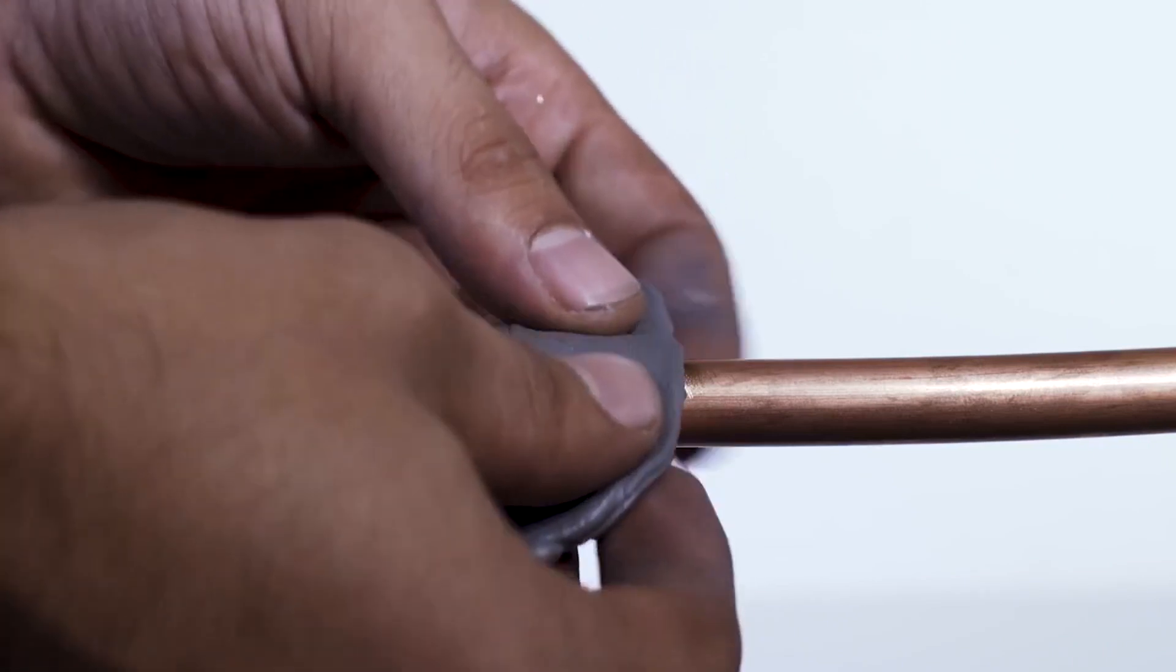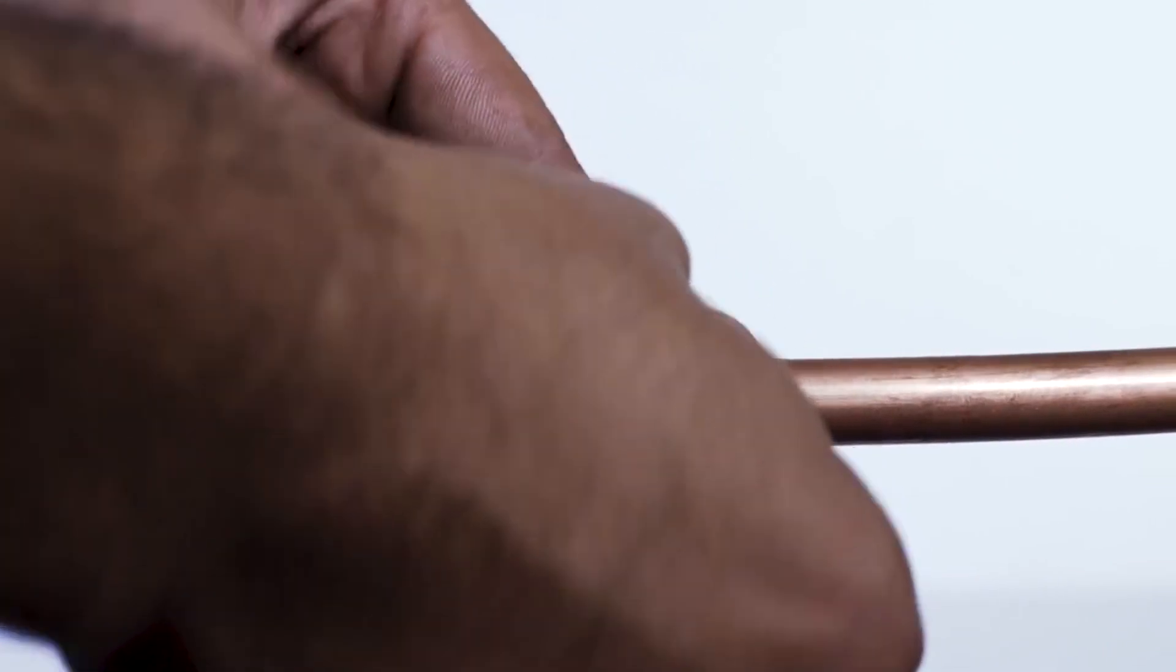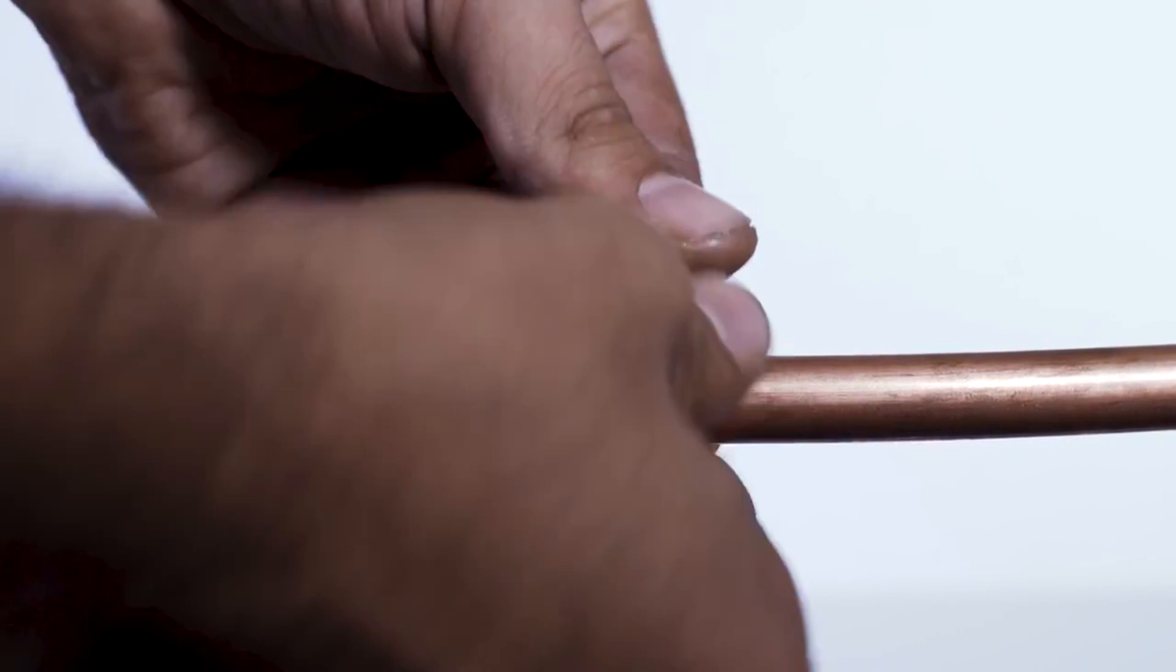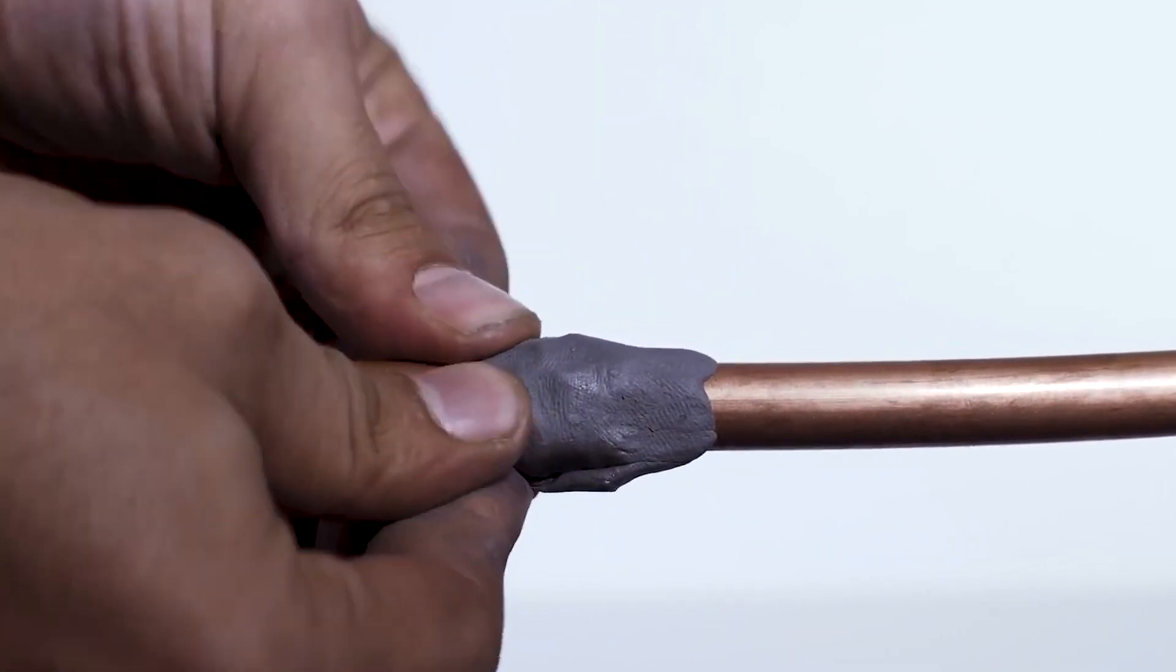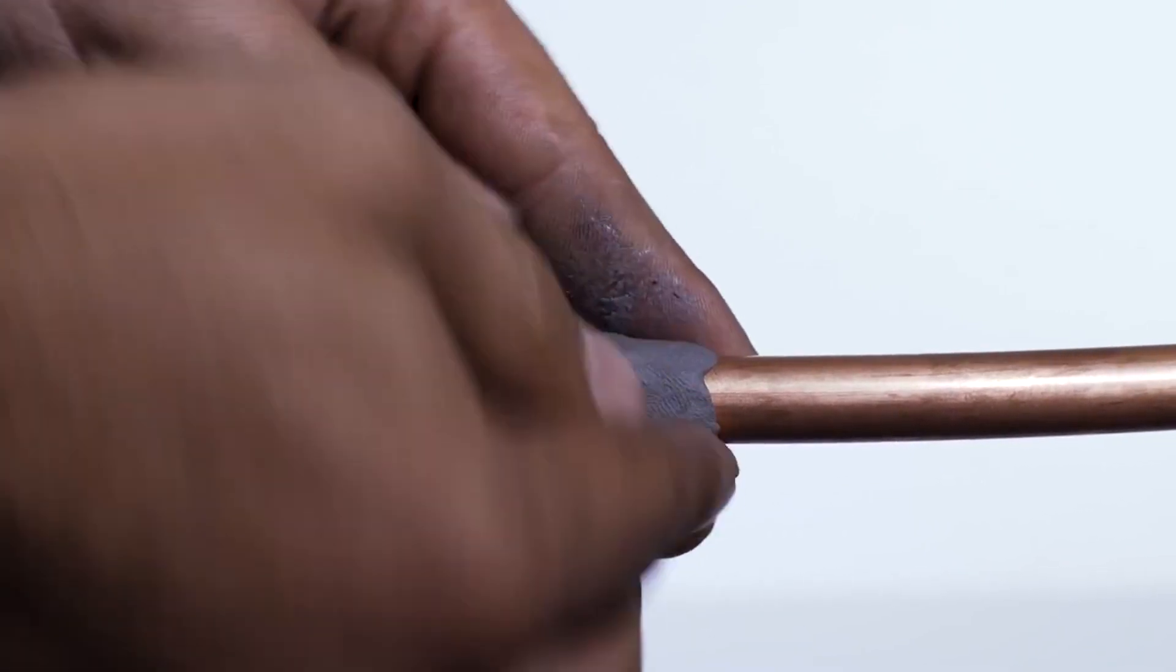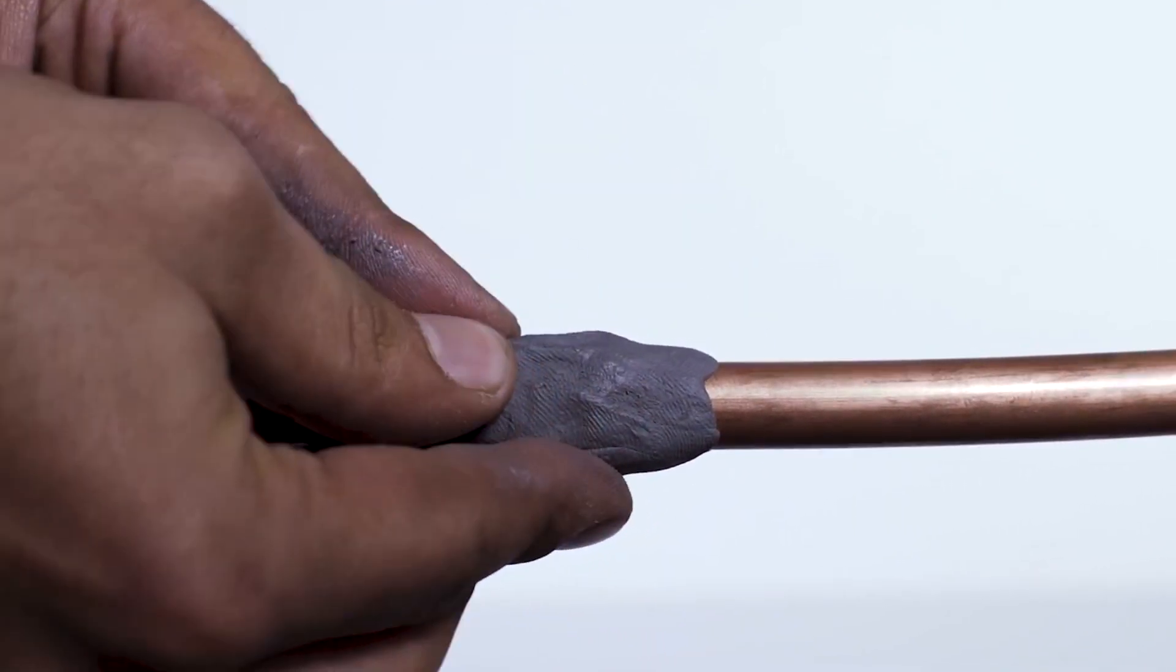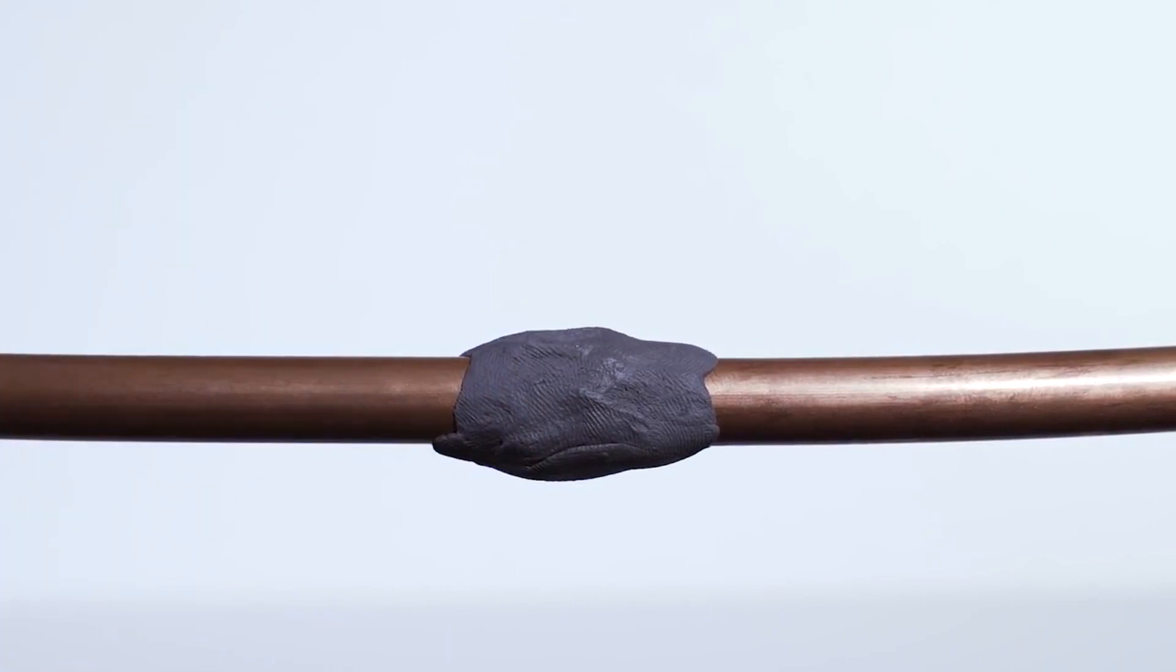Apply the external around the circumference of the tubing. You need about a quarter inch of product on either side of the hole. The thickness of the putty around the tubing should be at least the same as the size of the hole. So if the hole is three millimeters wide, then the external around the tubing should be at least three millimeters thick.